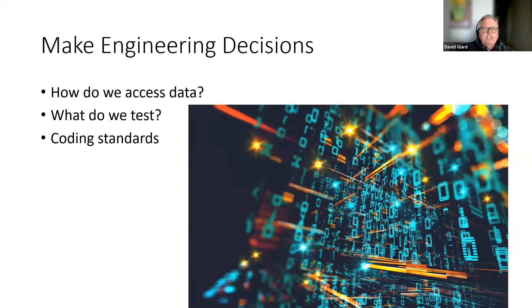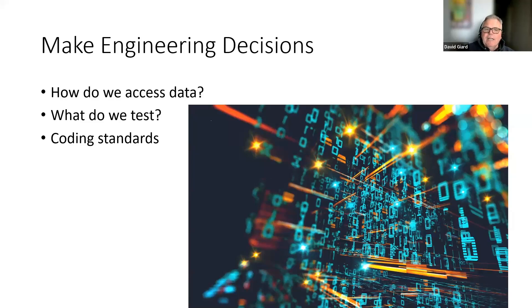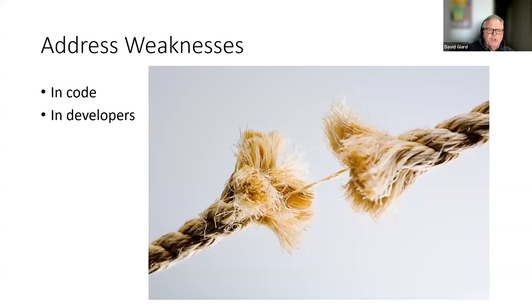Code reviews are also a good way to make engineering decisions. A good team will have architecture sessions and documentation ahead of time covering data access, testing standards, and coding standards, but sometimes things get missed. During a code review those gaps get highlighted. Code reviews also address weaknesses in the developers themselves — reviewers can teach the code author about design patterns, architectural patterns, or libraries that exist to do things more efficiently. It's a way to transmit knowledge between reviewer and author.